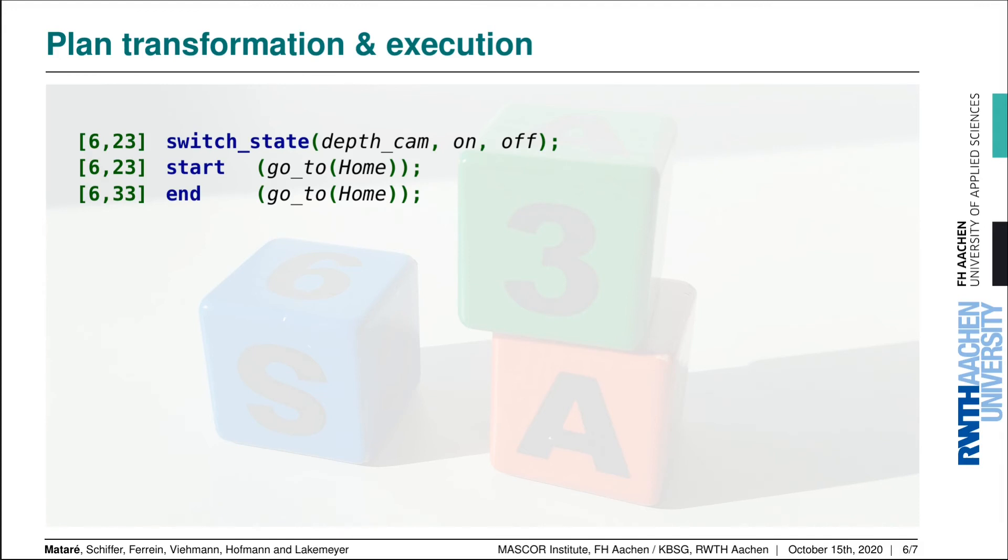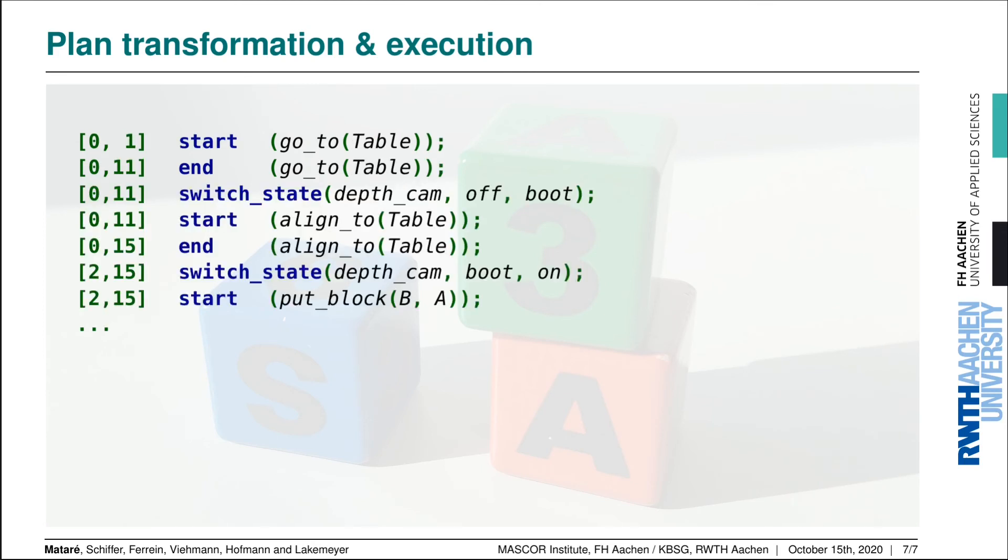Then the action to switch from the on state to the off state is again endogenous, so we can just do that. Then start the go_to and wait for it to end. So far so good. Now let's look at a different case where things don't go so smooth.